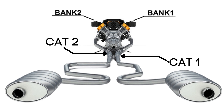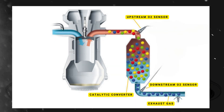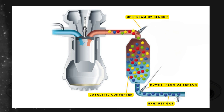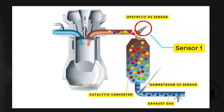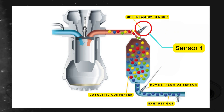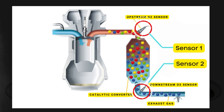Each bank has its own exhaust line, and each exhaust line is equipped with two catalytic converters. Here's where the oxygen sensors come in. Each catalytic converter typically has two or three oxygen sensors. The upstream sensor, which we refer to as sensor 1, is positioned before the catalytic converter. Then there's the downstream sensor, known as sensor 2, which is located after the catalytic converter.